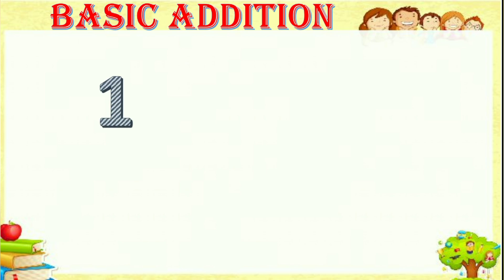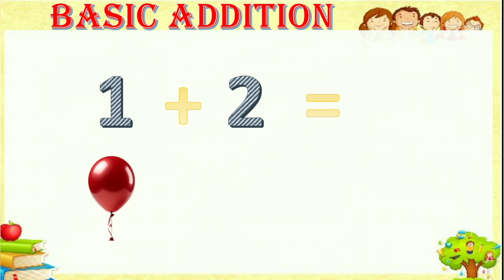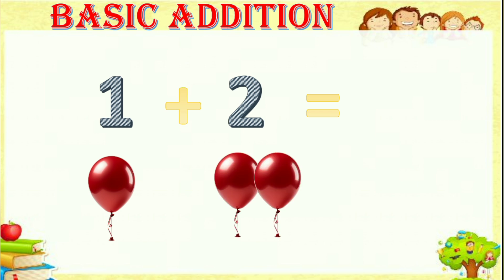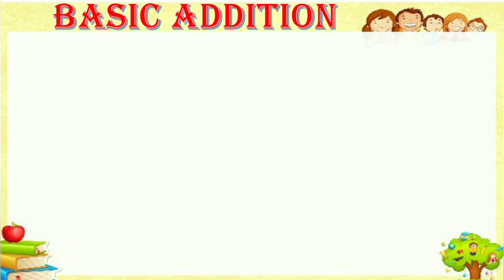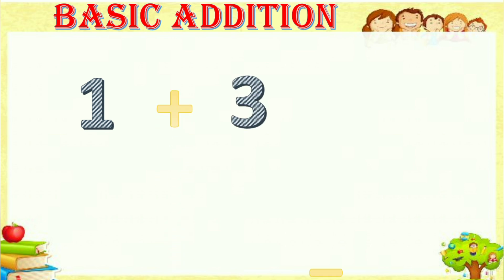Next, one plus two equals. For one there is one balloon, and for two there are one, two — two balloons. So totally one, two, three — there are three balloons.